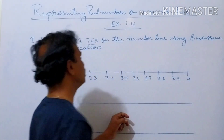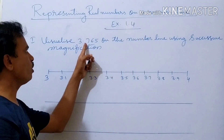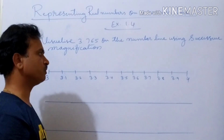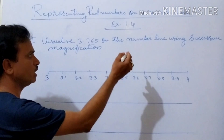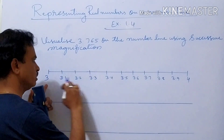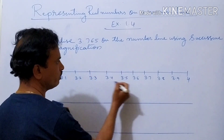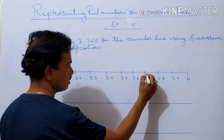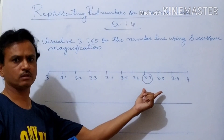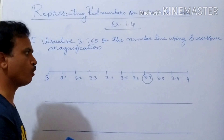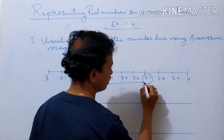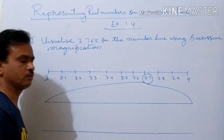Now what we want here is 3.765 on the number line using successive magnification. Now again, 3.7 is there. We should take 10 parts in this interval around 3.765.